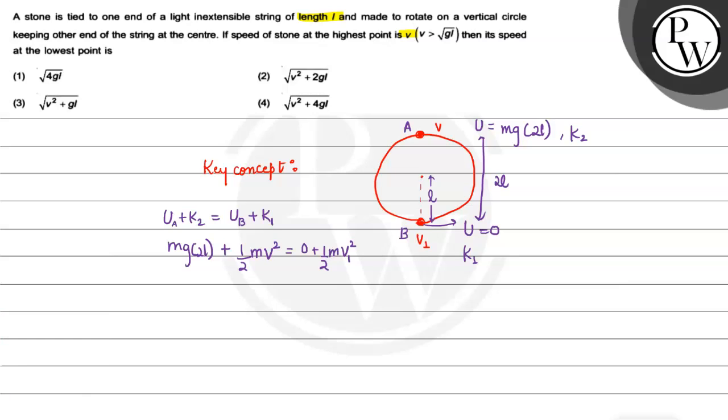So here we have 2MgL plus half MV squared equals half MV1 squared. Solving this, 4gL plus V squared equals V1 squared. Therefore V1 equals square root of 4gL plus V squared.